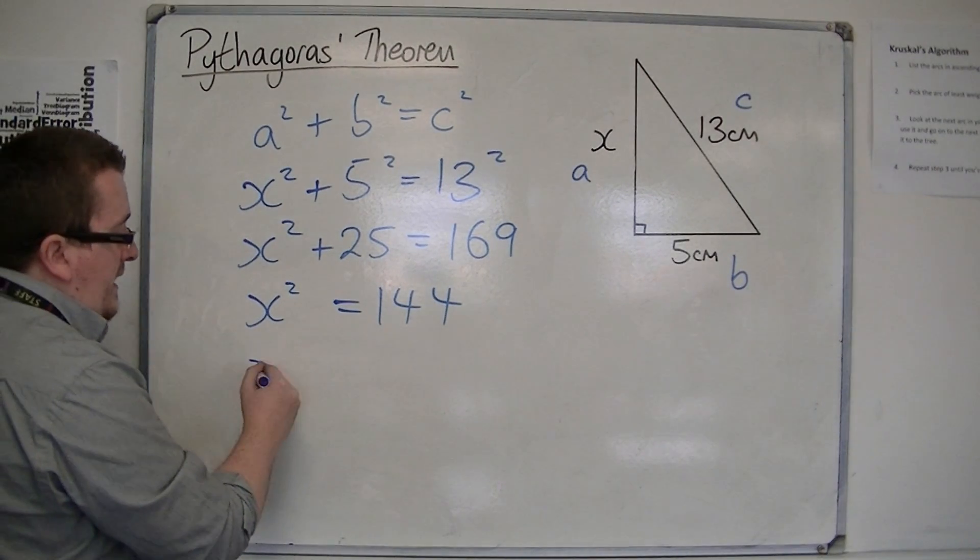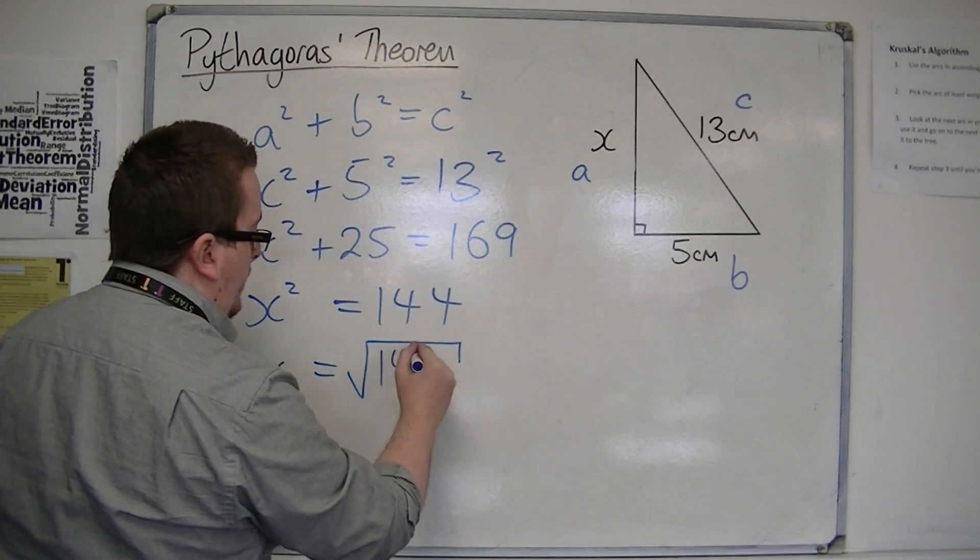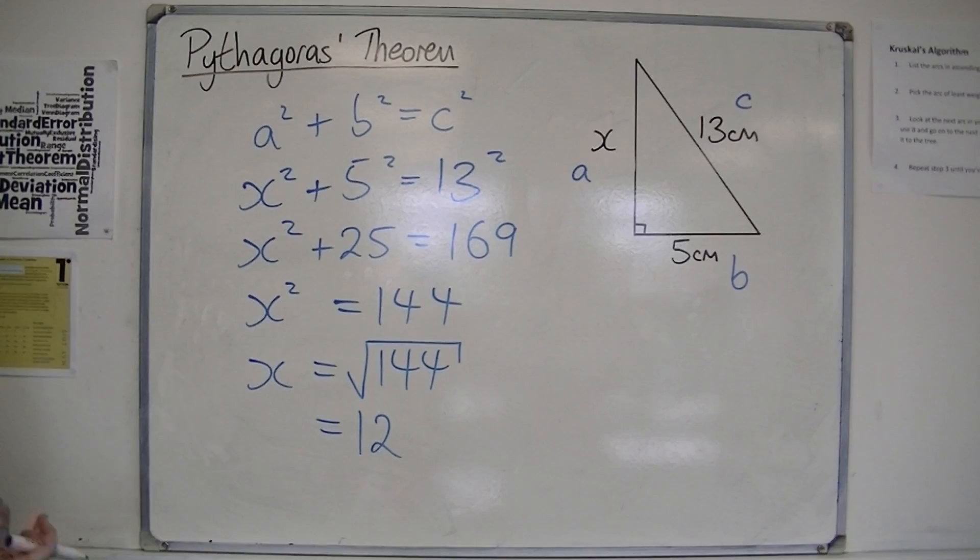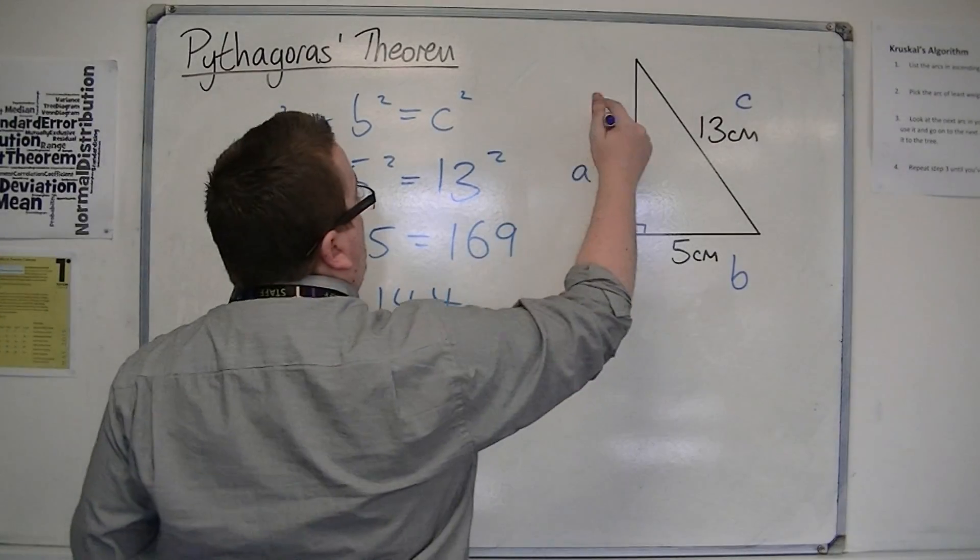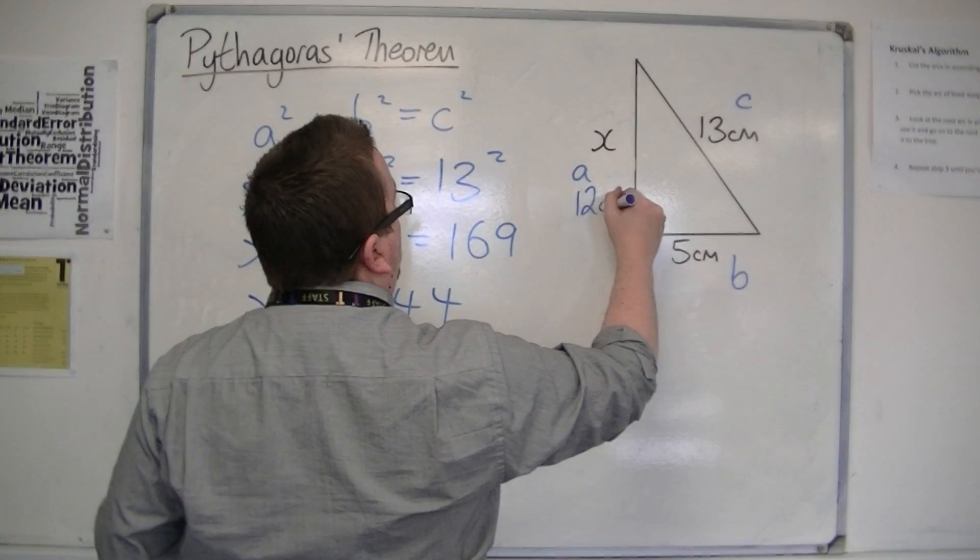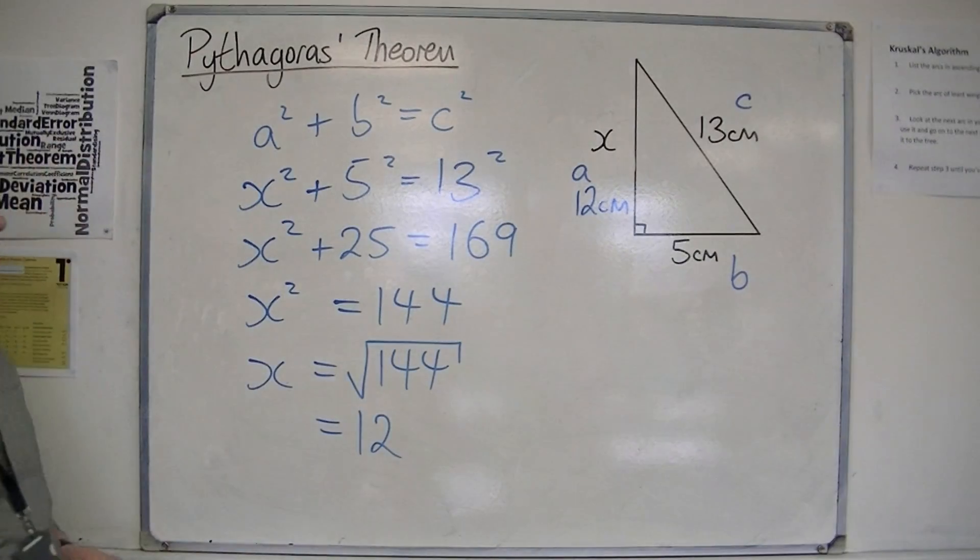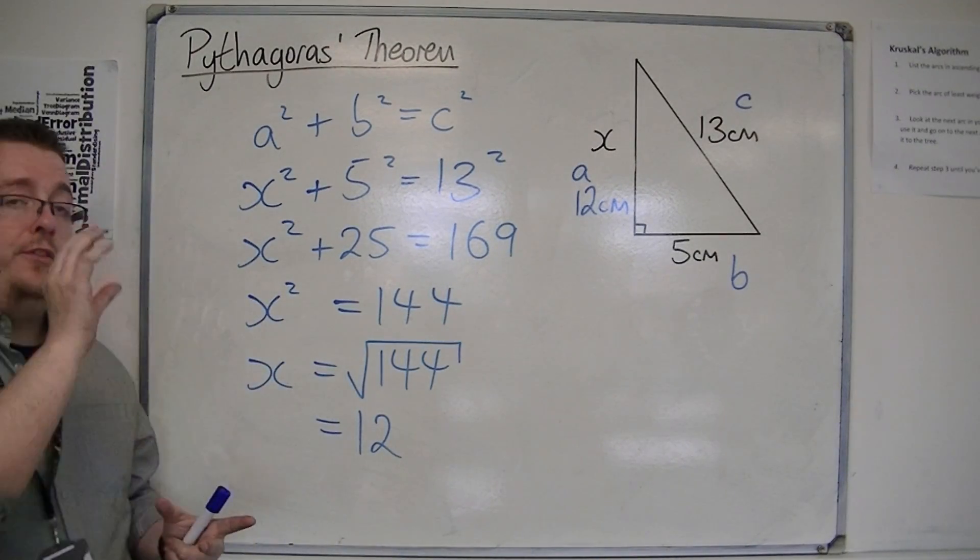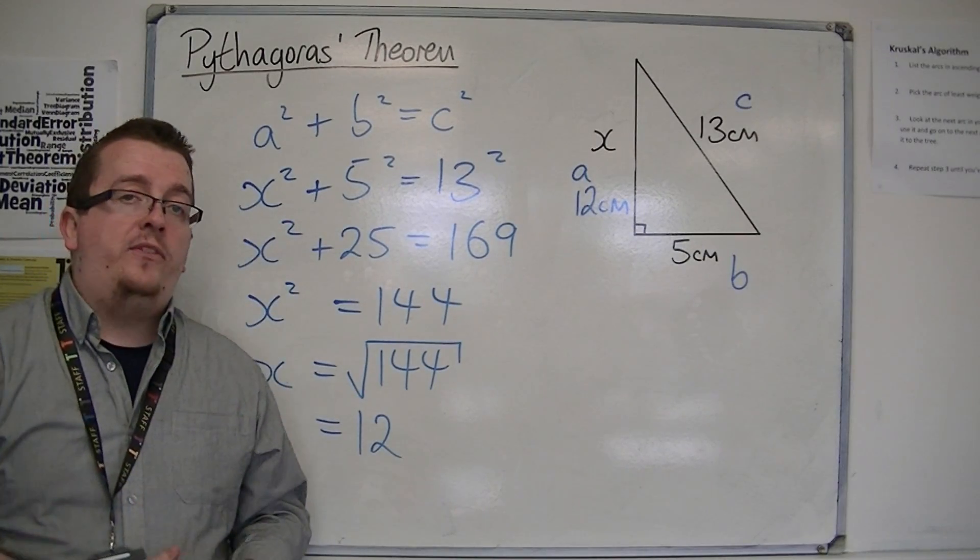We then need to square root, as we usually would. So the square root of 144 is 12. So that would mean that x is 12 centimeters in length. And that's how we can use Pythagoras to find the length of a missing side.